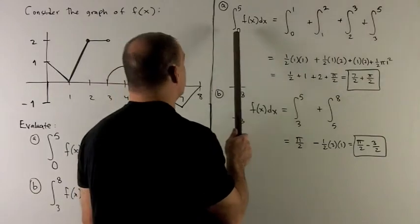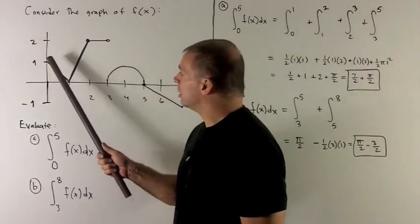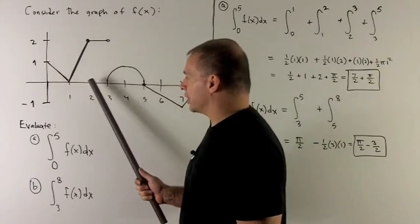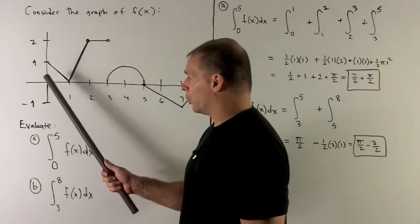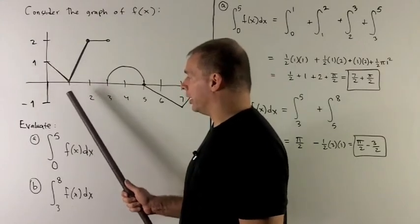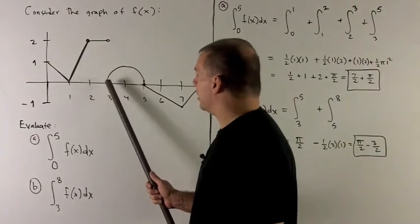Looking at the graph, I want to break this up into areas where I can actually do some work. I would first do from 0 to 1, then 1 to 2, then 2 to 3, and then 3 to 5, because I know how to do triangles for the first two regions.